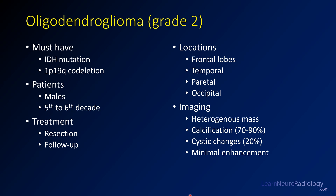To be a grade 2 oligodendroglioma, you must have an IDH mutation and 1p19q codeletion — those are the 2016 WHO criteria required for the diagnosis. These patients have a slight male predominance and tend to occur in the fifth to sixth decade. Treatment is resection; often they do not receive radiation or chemotherapy at the time of resection because of relatively good prognosis. On imaging, you get a heterogeneous mass, often with calcification and cystic changes, and minimal enhancement.